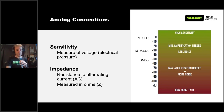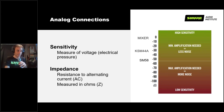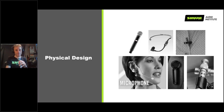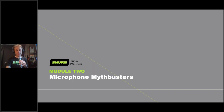Don't forget about the physical design of the microphone. Microphones come in all different shapes and sizes for all different applications: handheld, lavalier, headset, side address, end address — endless physical variations. There are no right answers, just pros and cons to each, which we'll discuss in the applications section. But first, a little bit of mythbusting.